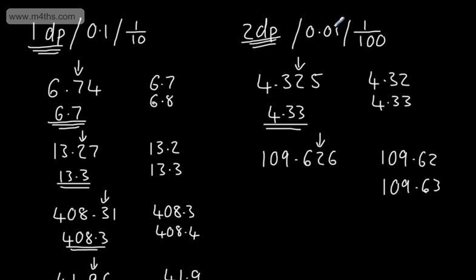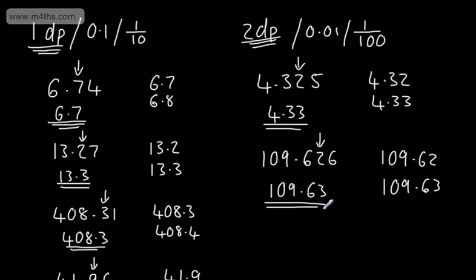We see the number after it is more than 5, so we're going to round up, and this will be 109.63 — correct to two decimal places.